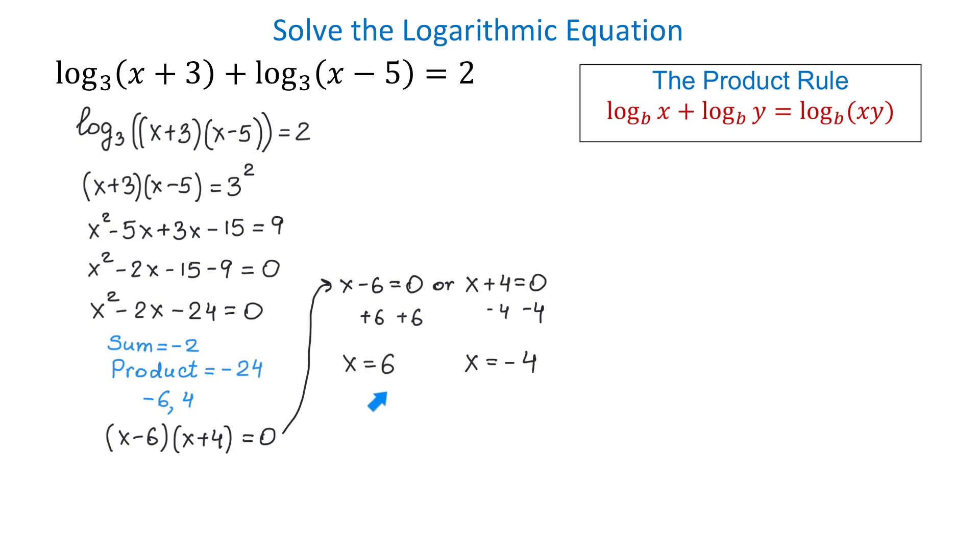So, we got two solutions, but now we have one more important thing to check. Recall that in a logarithm, the base has to be positive and not equal to 1, and the result has to be positive. Sometimes, when we use the properties of logarithms to solve logarithmic equations, we might end up with extraneous solutions that are not solutions to the original equation.